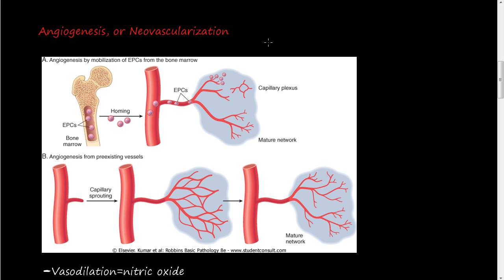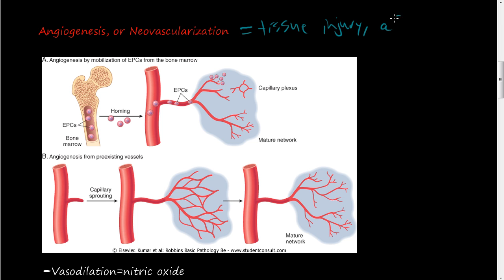In embryology, when talking about the way that blood vessels are created and expand while we are growing as embryos, as zygotes, as babies, it's called vasculogenesis. Angiogenesis and neovascularization are different and only refer to tissue injury or after child development.